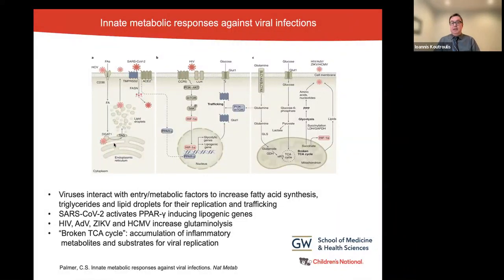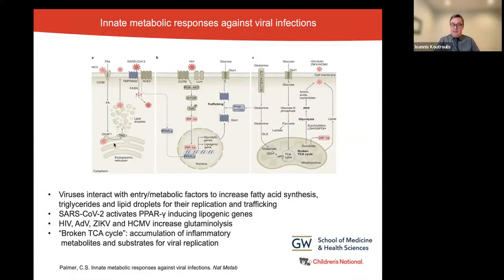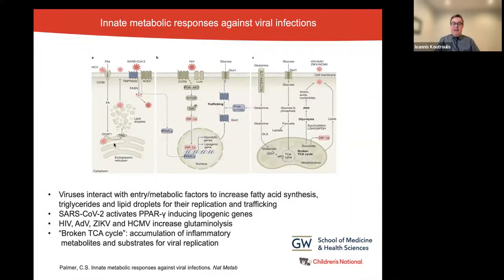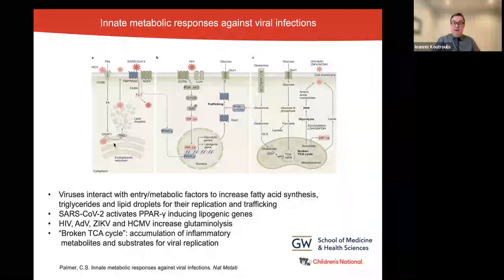Glutamine is converted to glutamate and that is converted to alpha-ketoglutarate, restoring the TCA cycle bioenergetic capacity. Having so many molecules to increase the TCA cycle capacity may also induce what we call a broken TCA cycle, which means accumulation of inflammatory metabolites. The accumulation of those metabolites is harmful because it can increase glycolysis and provide substrates for viral replication and worsening viral infection.